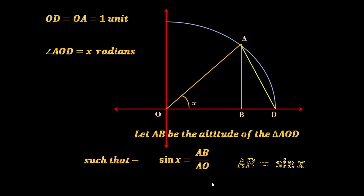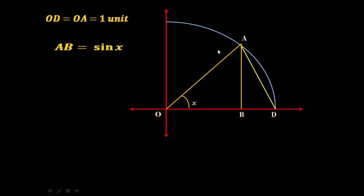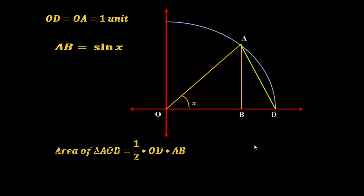then in triangle AOB we can write sine of X equals AB by AO, where AO equals one unit, thus AB equals sin(X). Here in this diagram, OD equals OA equals one unit because of the unit circle, and AB equals sin(X). Now if we talk about the area of triangle AOD, that is half into base into height, where base is OD and height is AB.